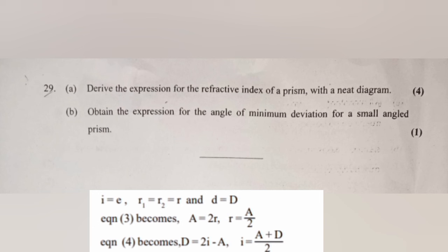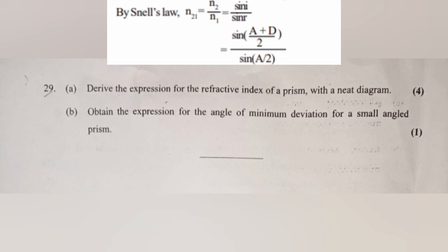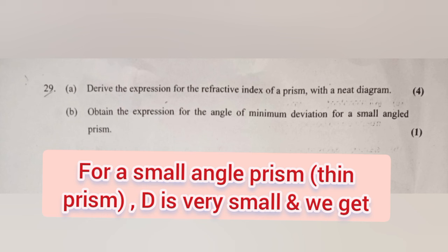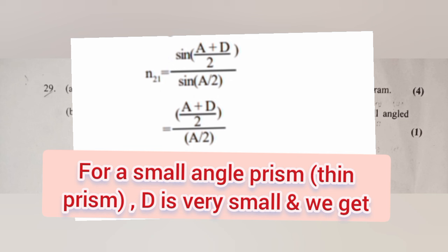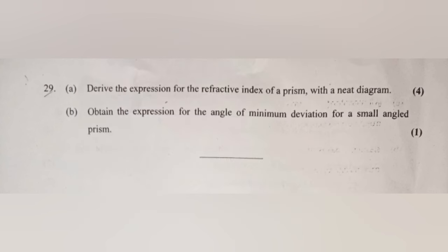By Snell's law, n21 = n2/n1 = sin i / sin r. The expression for the refractive index of a prism is n21 = sin((A + D)/2) / sin(A/2). Q29b: For a small angle prism where D is very small, n21 = (A + D)/2 ÷ (A/2) = (A + D)/A, giving the expression D = (n21 − 1) × A.